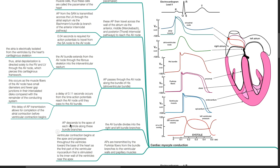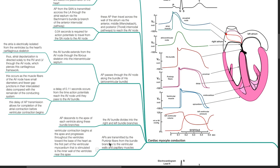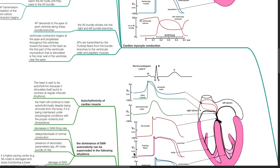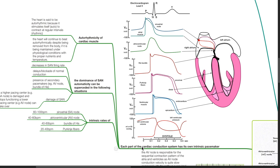Action potentials descend to the apex of each ventricle along the bundle branches and are then transmitted by the Purkinje fibers from the bundle branches to the ventricular walls and papillary muscles. Ventricular contraction begins at the apex and progresses towards the base of the heart, as the inner wall of the ventricles near the apex is the first part of the ventricular myocardium stimulated.